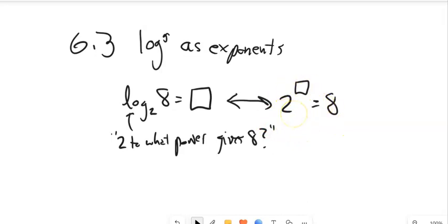And the answer is 3. 2 to the third power is 8. 2 times 2 times 2 is 8. So log base 2 of 8 is equal to 3. Logarithms are exponents. They spit out exponents. That's what they do.